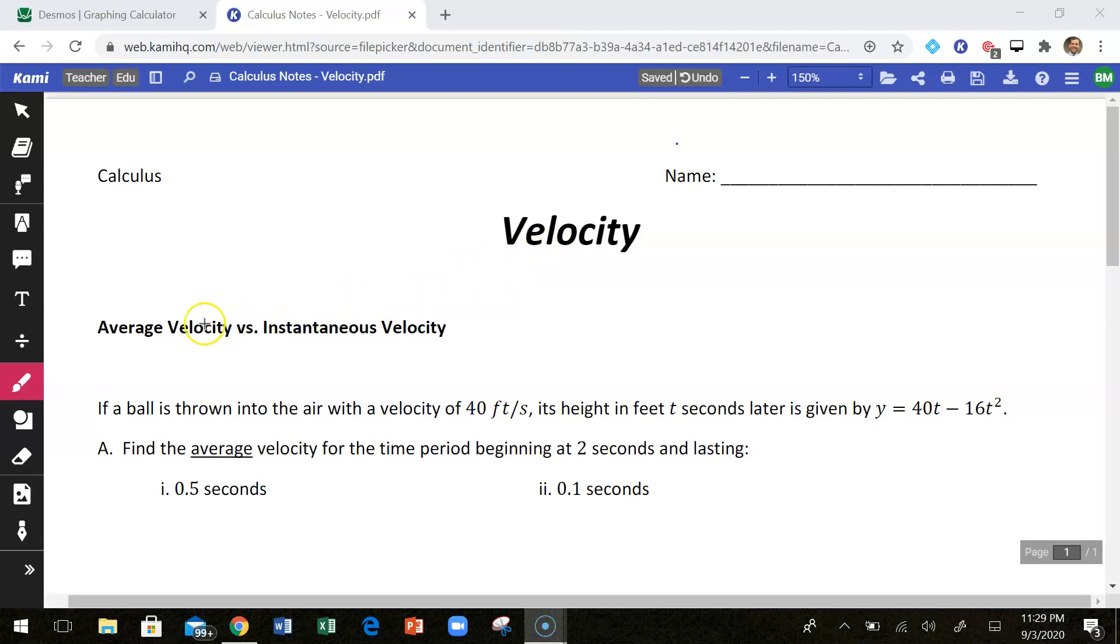So first we want to talk about the difference between average velocity and instantaneous velocity. An average velocity is essentially taking a distance traveled over time and then dividing by that time that it took to go that distance. So if you travel 100 miles and it took you however long that took you to do it, you take the 100 miles divided by that time and that is your average velocity for that trip.